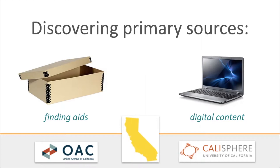The second is through digital content, which includes things like scans of photographs, paintings, writings, and more. Digital content can be made available online, enabling you to access and view the collections from anywhere. The Online Archive of California and Calisphere are complementary services that we support. OAC is a system for finding aids and description about collections, and Calisphere is a service for aggregating digital collections.